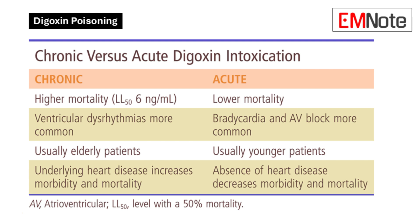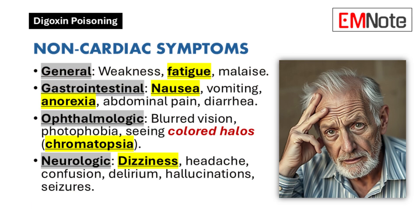Digoxin toxicity can affect organs besides the heart. It can cause weakness, fatigue, and malaise. Some patients get gastrointestinal issues like nausea, vomiting, anorexia, abdominal pain, or diarrhea. Vision changes can also occur — blurred vision, photophobia, and even seeing colored halos, which is called chromatopsia. Neurologic symptoms are possible too: dizziness, headache, confusion, delirium, hallucinations, and even seizures.